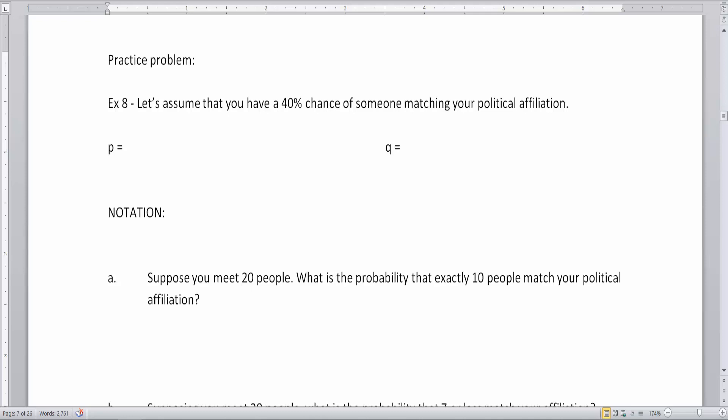Here we go. Hopefully you've given this a try. Suppose you have a 40 percent chance that someone is going to match your political affiliation, so what would be your p and your q? The p would be your success which is having someone match your political affiliation, so the p would be 0.4 or 0.40. The q would then be the complement of p which would be 0.6 or 0.60. The notation is that our X is going to belong to the binomial distribution with some target trial group n and the success rate is 0.40. So this notation is going to follow us through the rest of the semester as we deal with other kinds of distributions.